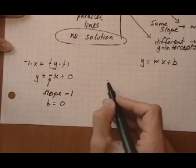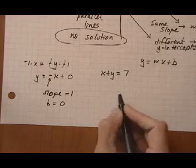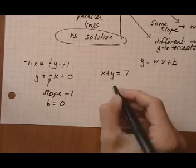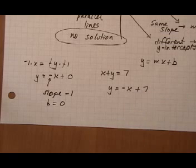Now let's check the other equation. x plus y equals 7. Solve for y means take away x on both sides. If I take away x on both sides, I have y equals minus x plus 7.